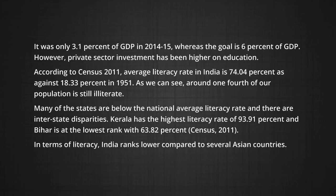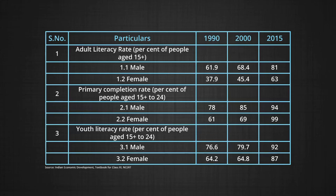In terms of literacy, India ranks lower compared to several Asian countries. According to the Human Development Report 2011, the adult illiteracy rate was 37.2 percent in India during 2005 to 2010, as against 6 percent in China, 9.4 percent in Sri Lanka, 4.6 percent in Philippines and 2.3 percent in Argentina. It is widely believed that the poor performance of India on the literacy front has affected its overall development.